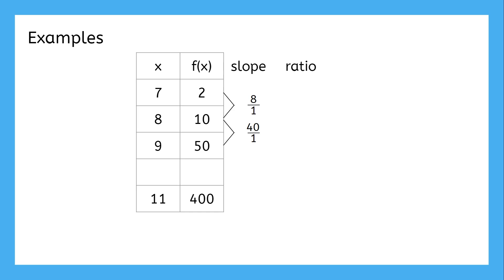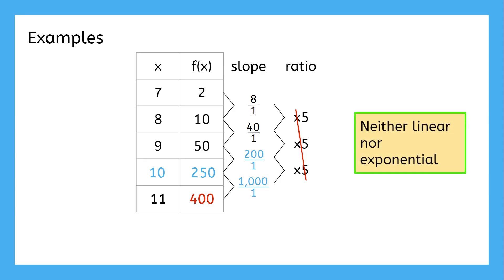Between the first two slopes, the ratio is 5. The missing data point means that we need to continue the ratio and see if it picks back up with the data afterwards. If the ratio stays 5, then the next slope will be 200 over 1. So the missing point would be 10, 250. And then multiplying that slope by 5 would give a slope of 1000, which would make the next point way higher than just 400. So a ratio of 5 does not work for this whole data set. This data doesn't have a constant slope nor a common ratio between its slopes, so this data is neither linear nor exponential.